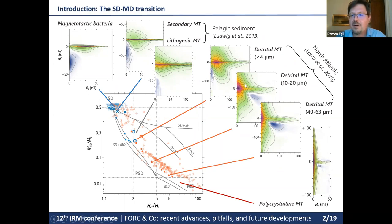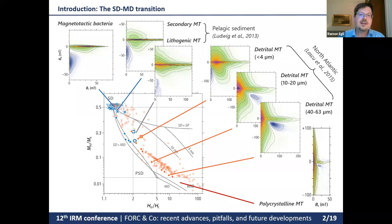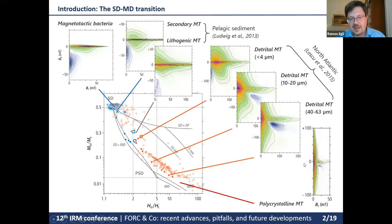In smaller sizes we still have the central ridge with contributions above and below it. As grain size grows, the FORC function changes progressively: the central maximum moves towards the origin and we start to have a larger vertical spread, continuously approaching the multi-domain end member. Both the Day diagram and FORC diagrams show an apparently continuous transition between single domain and multi-domain end members.